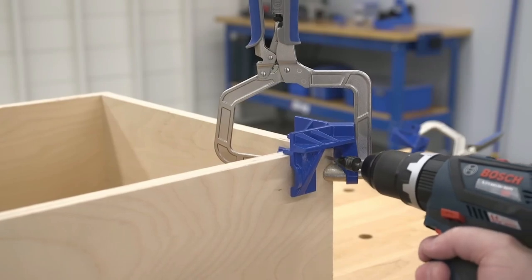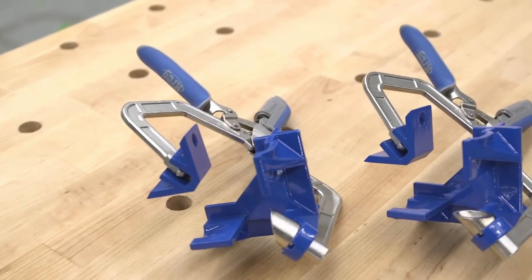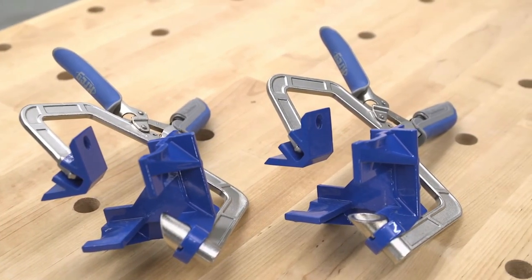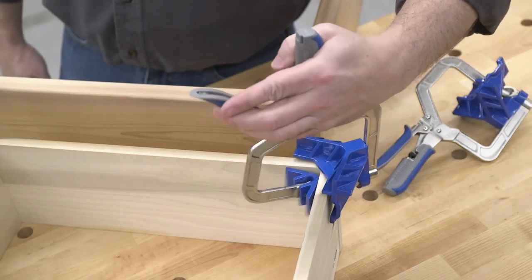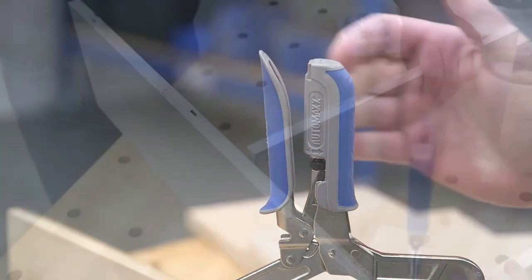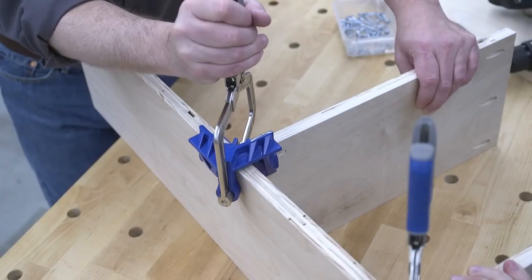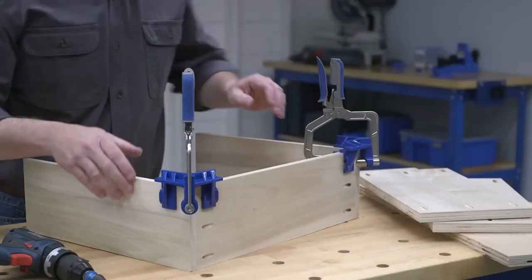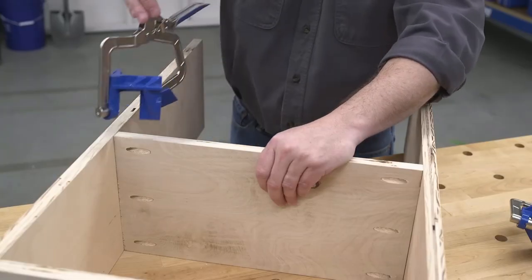With the 90 corner clamp you have both hands free to assemble your projects using Craig joinery or other types of fasteners. Plus, the Craig 90 degree corner clamp features Craig Auto Max technology which adjusts the clamp automatically to grip your workpiece securely.